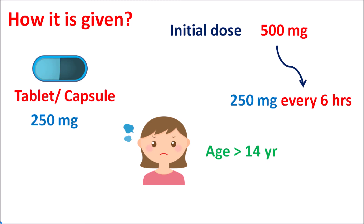In summary, mefenamic acid is an anthranilic acid derivative classified as a non-steroidal anti-inflammatory drug. It reduces COX enzyme activity as a non-selective COX inhibitor, inhibiting both COX-1 and COX-2, thereby inhibiting prostaglandin synthesis and reducing pain sensation. This drug should be used at a low dose to avoid thrombotic events and gastrointestinal side effects.